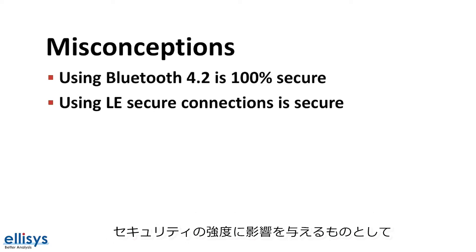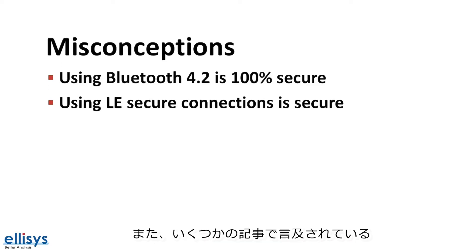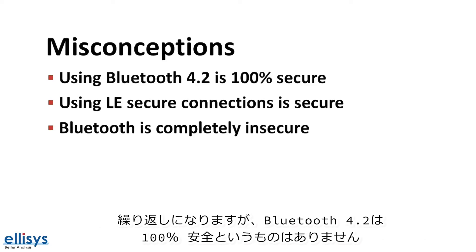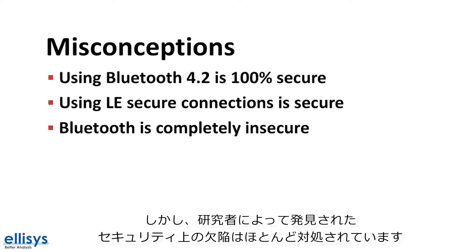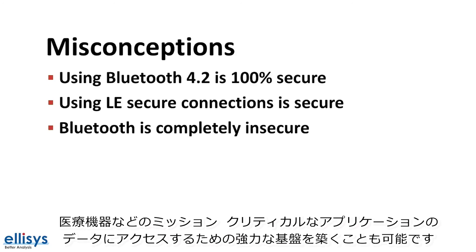Another aspect affecting security strength is the storage of keys and how possible it is for someone to gain access to them. At the opposite end, another misconception is that Bluetooth is completely vulnerable and insecure. Again, there is no 100% secure, but with Bluetooth 4.2, most security flaws discovered by researchers have been addressed, and it lays a strong foundation for implementing security that could protect against attacks in mission-critical applications such as medical devices.